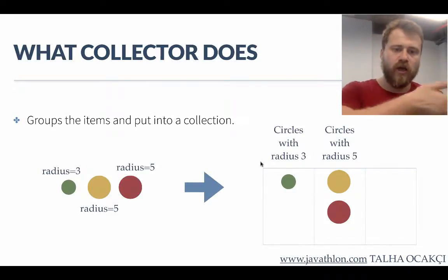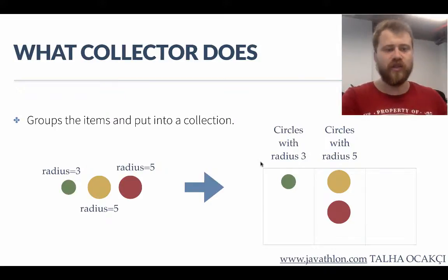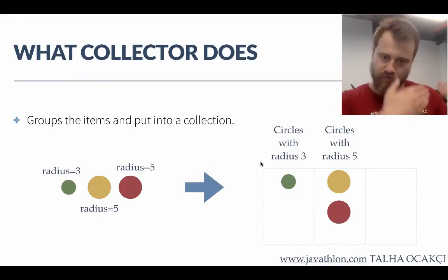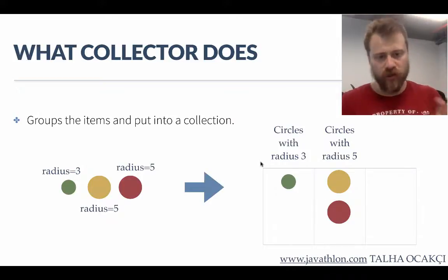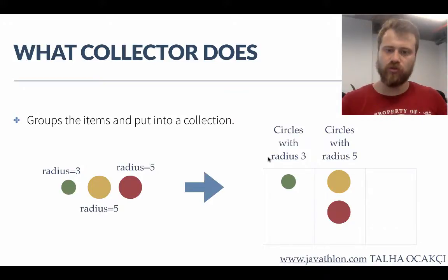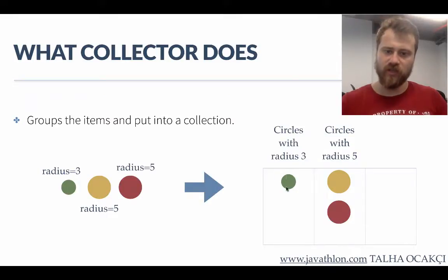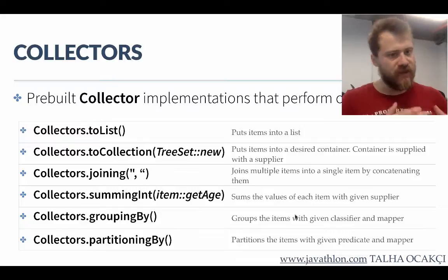The other thing is that a collector may group items according to some attributes and then put them into a collection. In this example we create a map and group all items according to the radius. Items with radius 5 go into one key, and items with radius 3 go into another key — so we have two keys inside this map.